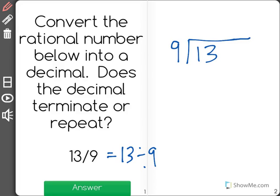Now I have 13, but I don't think that's going to give me enough to know whether the decimal terminates or repeats because I don't even have a decimal in the dividend. So I know that 13 is equal to 13 point as many zeros as I want really, because zeros have no value.